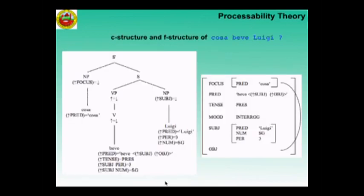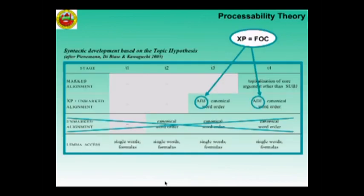In terms of development, the unmarked alignment stage is non-existent in the development of interrogatives because this fronting focus is necessary — it is lexically acquired quite early by learners across a fairly large variety of lexical items: where, what, who. And in fact many learners go on just with that — you don't even need the sentence to follow.